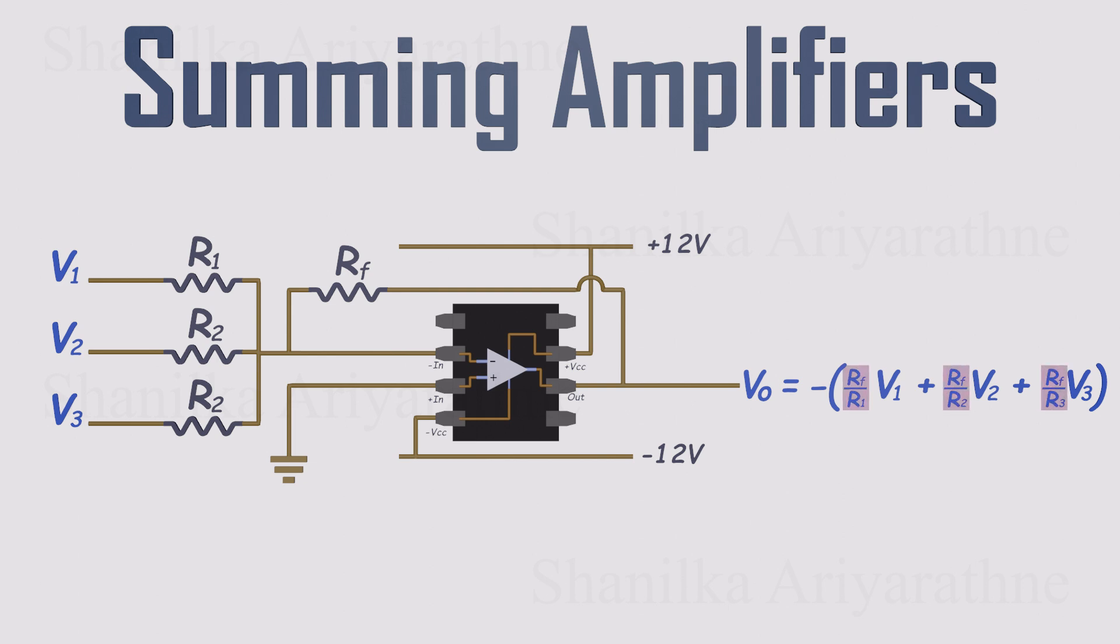And don't worry about that weighted term. If all the resistors are equal, the output is simply the negative of the sum of your input voltages. And the best part? You're not limited to just three signals. You can keep adding more inputs as long as you've got room for resistors.